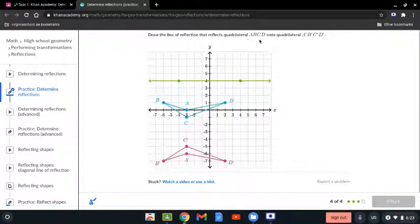Draw the line of reflection that reflects ABCD onto A', B', C', and D'. Again, what we're going to do is count one of the points. You can choose whatever you want. Let's do B. So 1, 2, 3, 4, 5, 6, 7, 8. Half of 8 is 4.